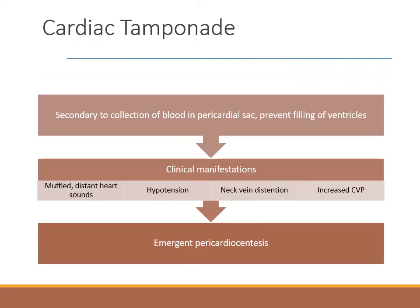Cardiac tamponade occurs when blood rapidly collects in the pericardial sac, compressing the myocardium because the pericardium does not stretch, preventing the ventricles from filling. Manifestations include muffled distant heart sounds, hypotension, neck vein distension, and increased central venous pressure. It is a medical emergency. A pericardiocentesis with surgical repair is the appropriate intervention.